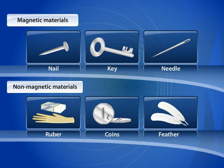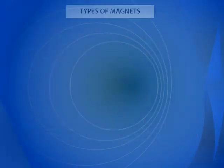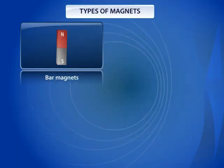Types of Magnets. Bar Magnets: In these magnets, the poles are located at the ends of the bar.